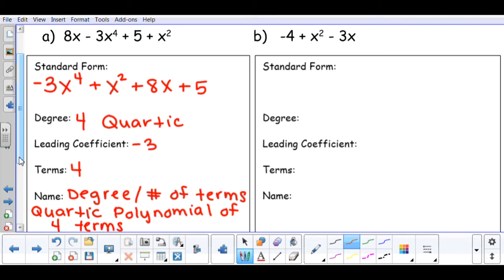I'm going to do the exact same thing in letter B. So highest degree down to our lowest degree. My highest degree term would be x², followed by -3x, followed by my -4.